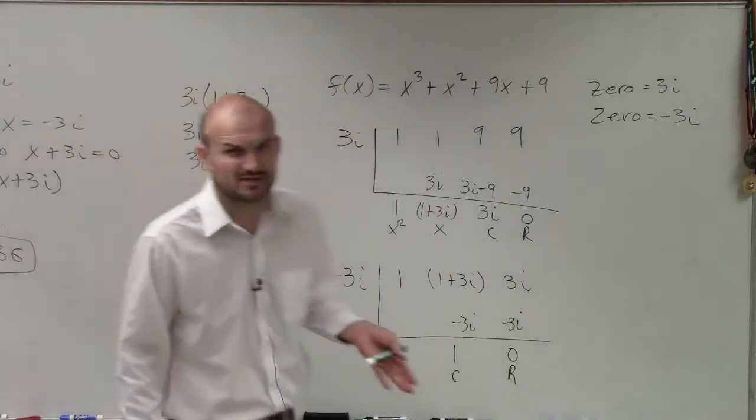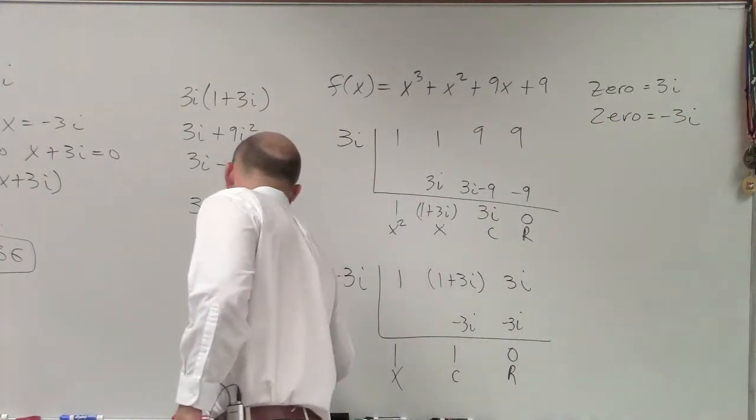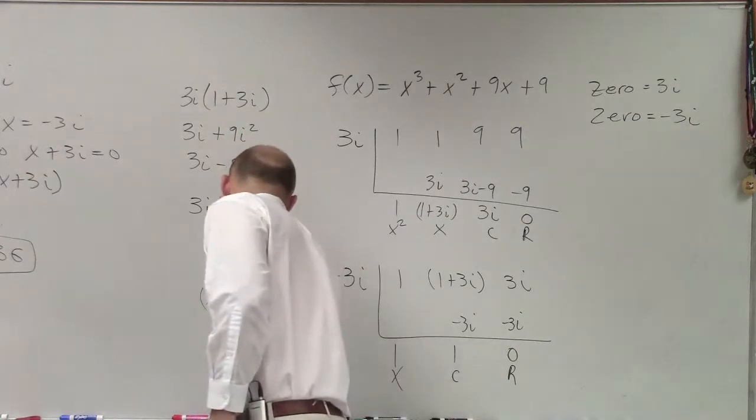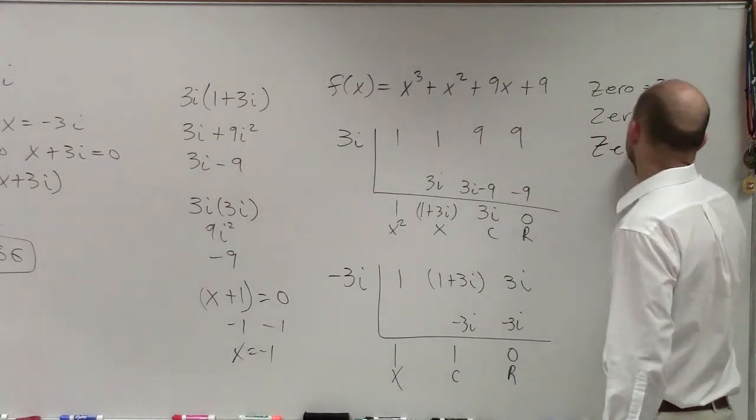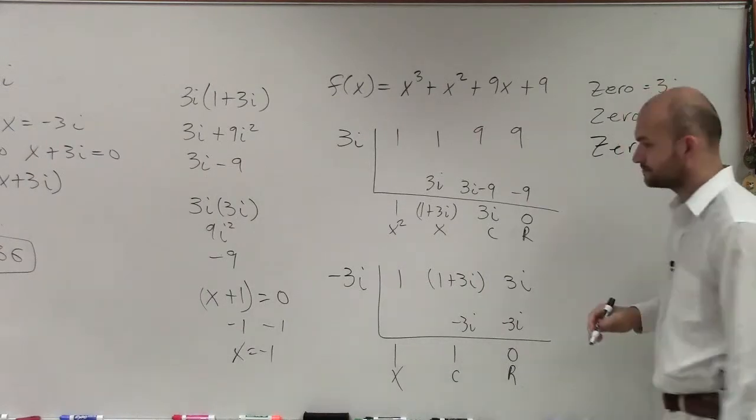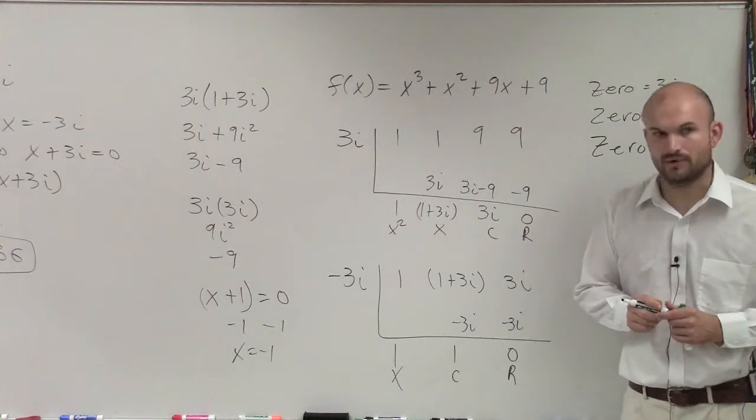Now is that quotient a factor, or is that a zero? It's a factor. So our factor, if we want to find the zero, set it equal to zero. So therefore, you set your factor equal to zero, and therefore, there's your final answer.